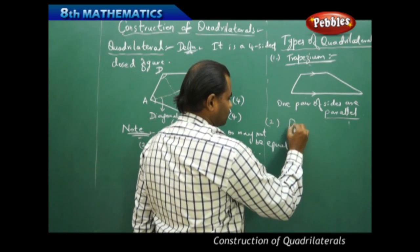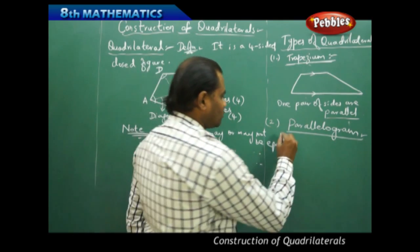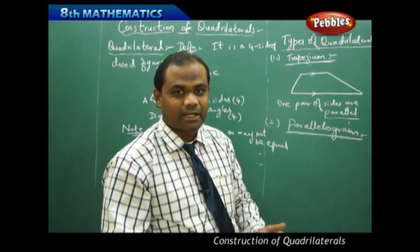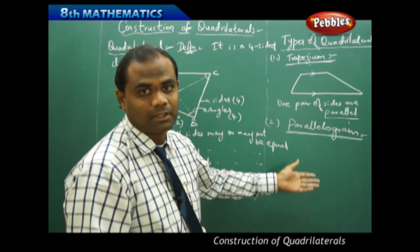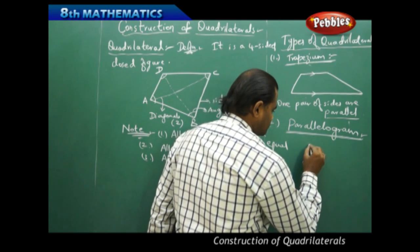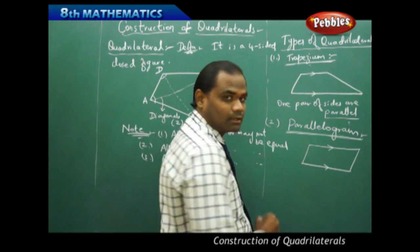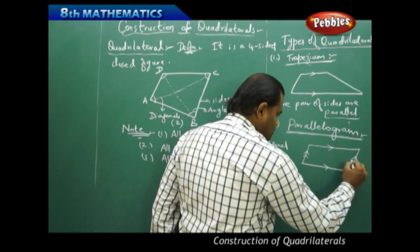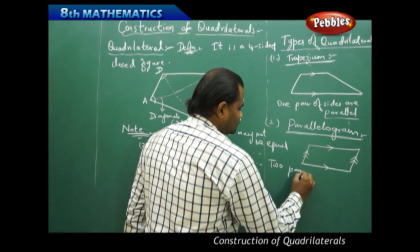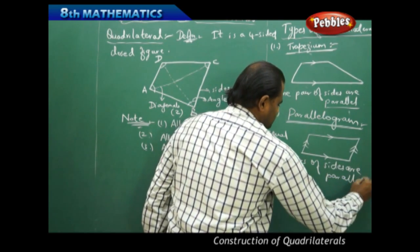The second type of quadrilateral is called a parallelogram. A quadrilateral is called a parallelogram if two pairs of sides are parallel. One pair of parallel sides gives a trapezium; two pairs of parallel sides gives a parallelogram. It has been derived from trapezium, with the additional condition that both pairs of sides must be parallel.